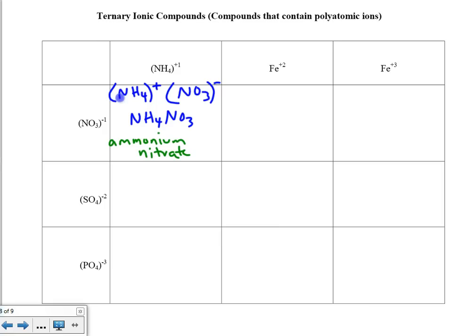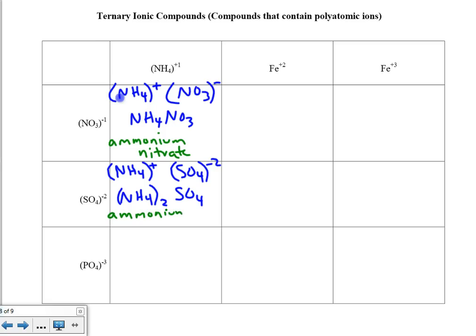In the next example, we're putting ammonium together with sulfate, SO₄⁻². Crisscrossing, we're going to need two of the ammoniums. So the formula is (NH₄)₂SO₄. I have parentheses around the ammonium to show that I need two of those NH₄ groups, but I don't have parentheses around the SO₄ because I only needed one of those. This substance is called ammonium sulfate.